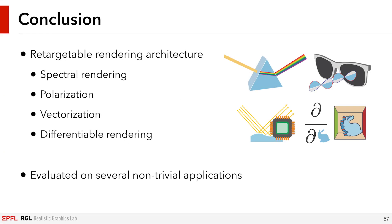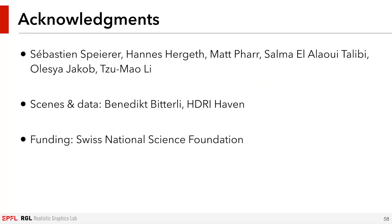In conclusion, we presented a retargetable rendering architecture which supports a large range of complex features in one single framework. We support spectral, polarized, vectorized, and differentiable rendering, all in the same codebase. We evaluated our system on a range of non-trivial applications, and with these applications, we only scratched the surface of what we believe to be possible. It could, for example, be interesting to combine the polarization support with inverse rendering, which could be useful to reconstruct real scenes observed using different polarization filters. We would like to thank the large group of people who contributed to this project in various ways over the course of its development. Thank you for your attention.